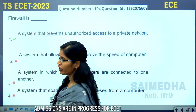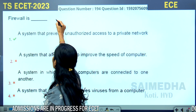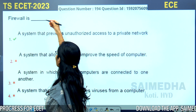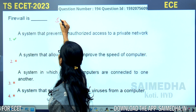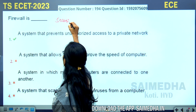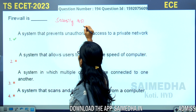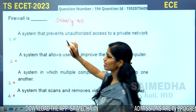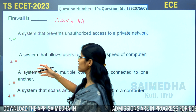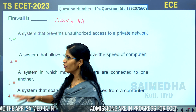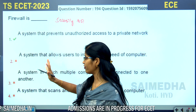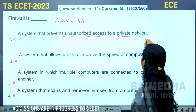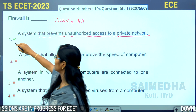What is the function of a firewall? Firewall is used for security purposes. The main function of a firewall is to prevent unauthorized access — meaning those who do not have authority. It is a system that prevents unauthorized access to a private network. So the first option is the correct answer.